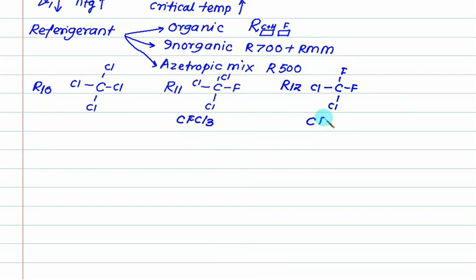Chemical formula is CF2Cl2. Then we have R13. R13 is C - carbon is 1 and 3 fluorine, so 3 fluorine and 1 chlorine. So this is CF3Cl.